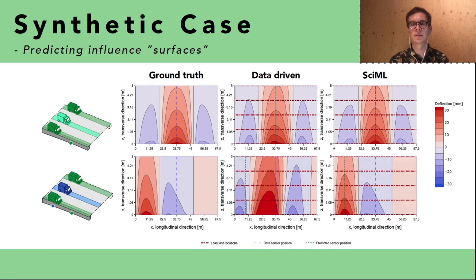If you want to predict an influence surface at another sensor then the data driven model cannot make an accurate prediction at all. The SciML model makes a very good prediction.